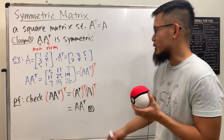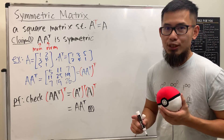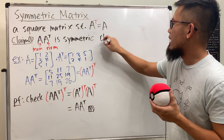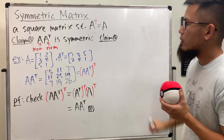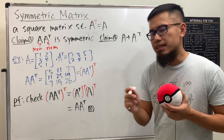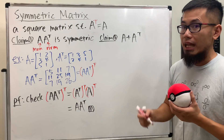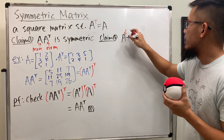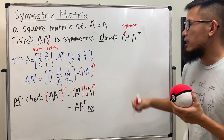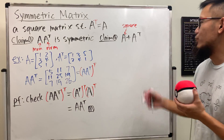Hopefully you can get this kind of question right on your test — it's a pretty easy proof, but if you don't know the definition you have no chance. Now let's look at claim number two: consider A plus A transpose. Because we're adding matrices, the dimensions must match, so A has to be square — say n by n.